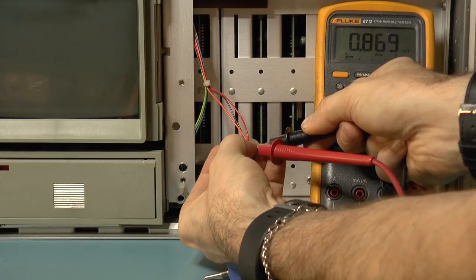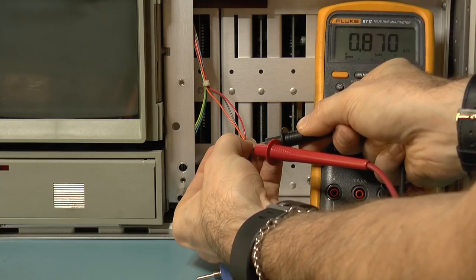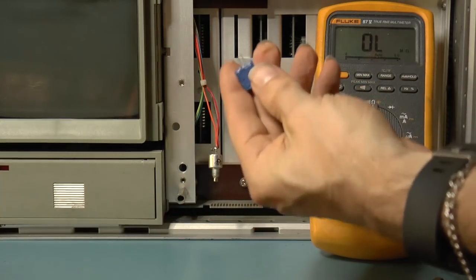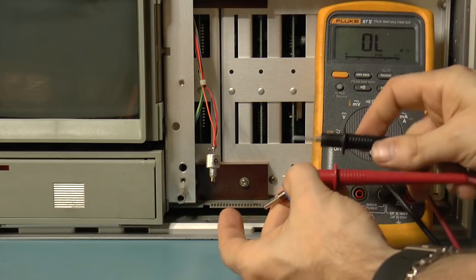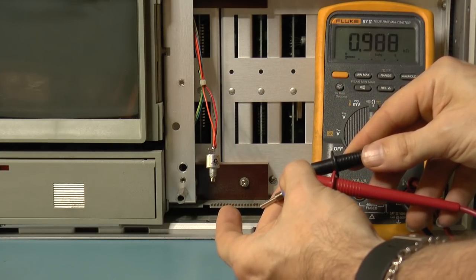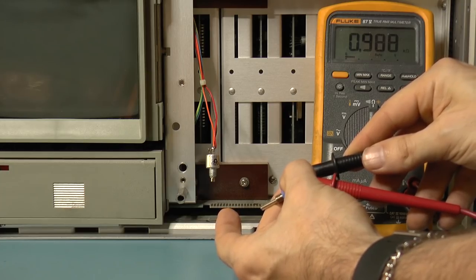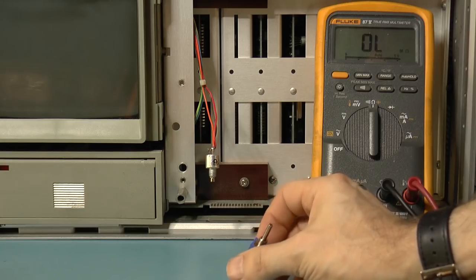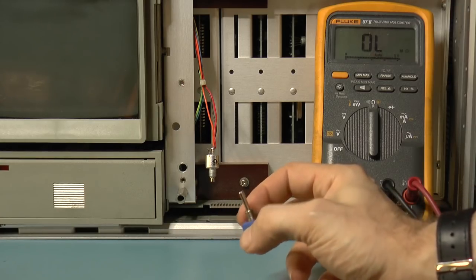So this isn't exactly 1k, it's more 870 ohms. This is the replacement. If I go across, I get about 1k. But the range is about the same, so I think I'm happy with this replacement.